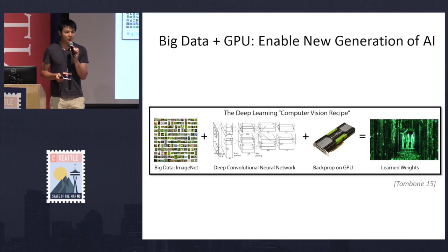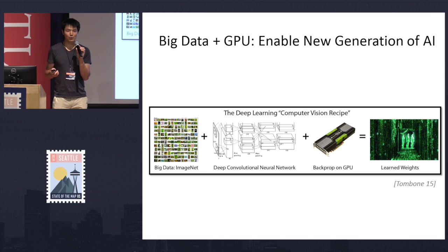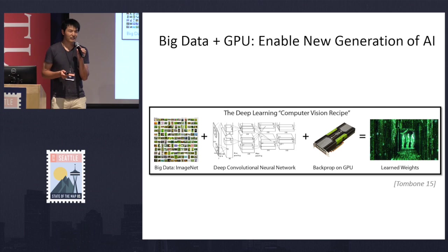But it wasn't until recently that we've been able to train these nets successfully with an unprecedented amount of data and modern GPUs. Now, these computer vision technologies built on top of deep learning can do incredibly well — often better than humans on the same task. For example, you can recognize images with thousands of categories, including hundreds of dog species.